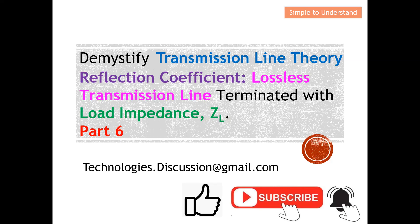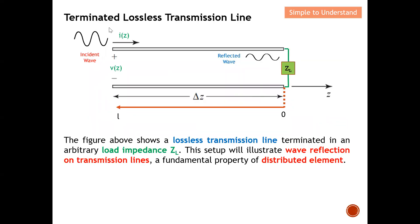So let's take a look. When a lossless transmission line is terminated with a load impedance, this is the diagram. The figure shows a lossless transmission line terminated in an arbitrary load impedance ZL. On one side of the transmission line, it is terminated with load impedance ZL. This setup will illustrate wave reflection.